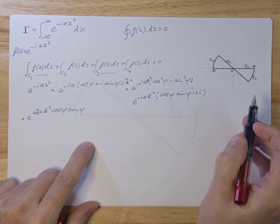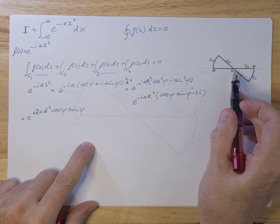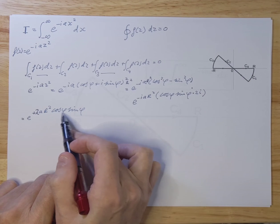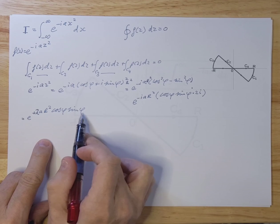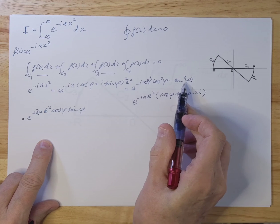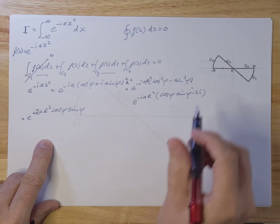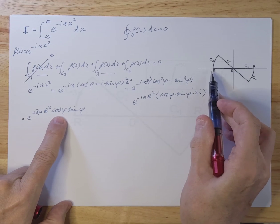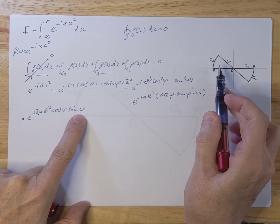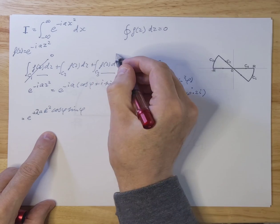Now we can see why we use this type of curve: cosine φ is x and sine φ is y in the complex domain. For c1, this value is always negative, so taking the limit r → ∞ makes this term go to zero, and consequently c1 = 0. For c3, cosine φ is −x, which is negative, and sine is positive, so again this is always negative, meaning c3 = 0 as well.